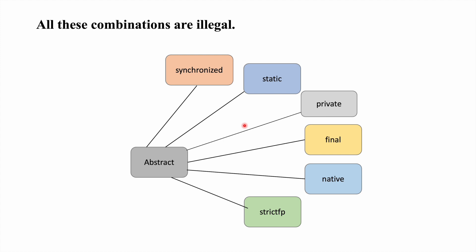All these combinations are illegal in Java, and in many interviews they will ask about these kinds of combinations. The illegal combinations with abstract are: abstract and synchronized, abstract and static, abstract and private, abstract and final, abstract and native, and abstract and strictfp. These are all illegal because abstract methods must be implemented outside the class, and these modifiers prevent that.